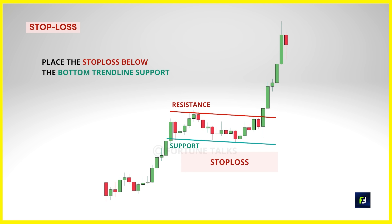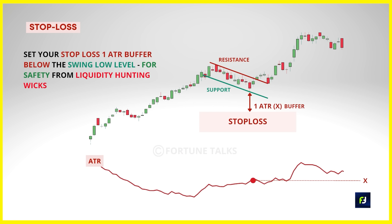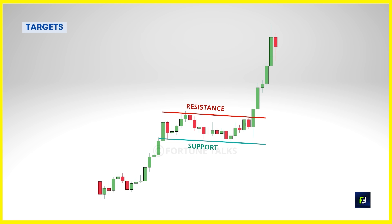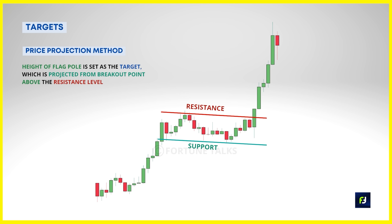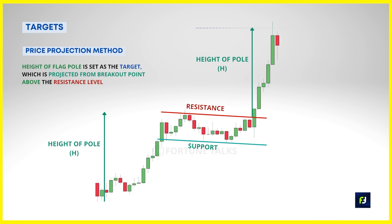There are still chances of long wicks that can take out your stop loss and then move higher, which can be annoying. To be extra safe, give your trades more breathing space by setting your stop loss a particular distance from the market structure using an ATR indicator. Once you identify the swing low of the bull flag, set your stop loss one ATR below that swing low level. For targets, one of the most common approaches is a predetermined profit target based on the length of the flagpole — known as the price projection method. Measure the flagpole from the bottom of the bullish price move to the top of the resistance, then project this length from the breakout point.